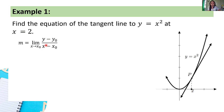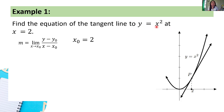So now, let's identify x₀ and y₀. Based on the given, x₀ is 2 — coming from 'at x equals 2.' Now, to get y₀, we substitute 2 into our given function. So we have y₀ = 2² = 4.